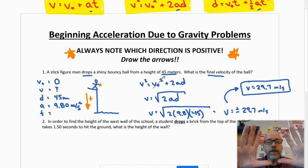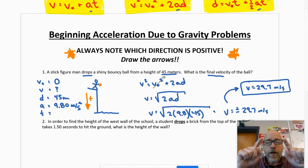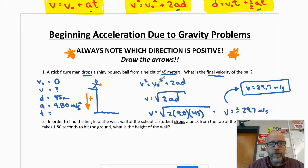Get those calculators out, don't just ride on my coattails. And I get an answer of plus or minus 29.7 meters per second. Now to get a final answer, which route should I choose? Well the ball is going down, down is positive, so the route I should use is going to be the positive 29.7.